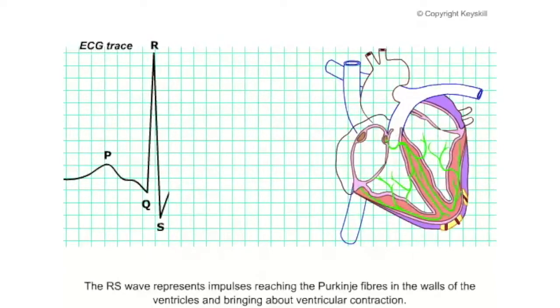The RS wave represents impulses reaching the Purkinje fibers in the walls of the ventricles and bringing about ventricular contraction.